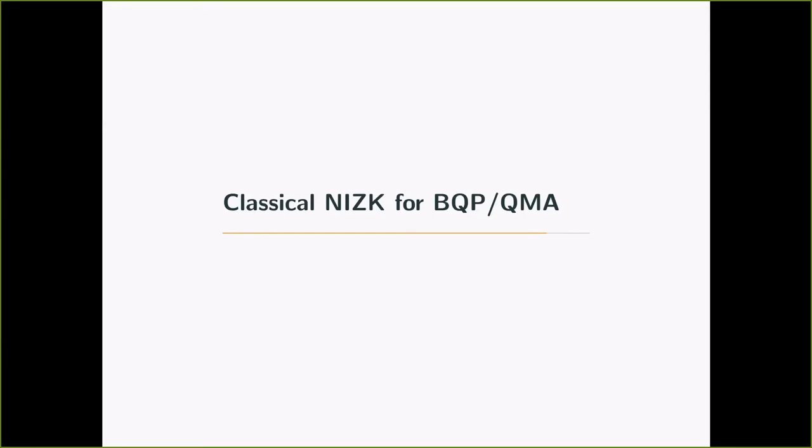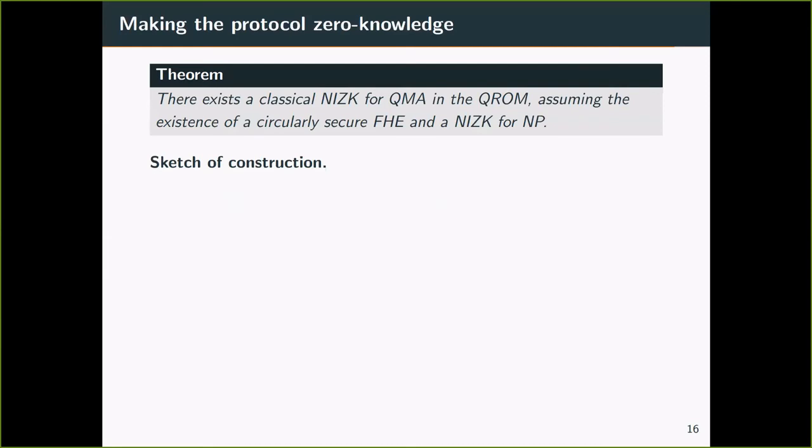The last step I'm going to talk about today is the classical non-interactive zero knowledge for BQP or QMA. In particular, we show that there exists a classical non-interactive zero knowledge using the circularly secure FHE and the NIZK for NP. I'll sketch our construction here. First, in the setup phase, the prover gets encryption of the secret key. The reason is that it is part of an instance to some NP relation defined by the verifier's final verdict. The security still holds because from the ciphertext, the prover is unable to tell what the secret key is.